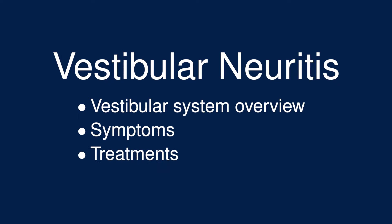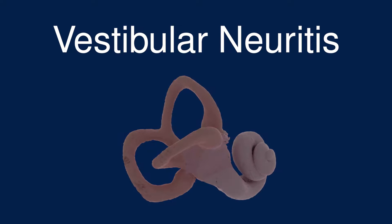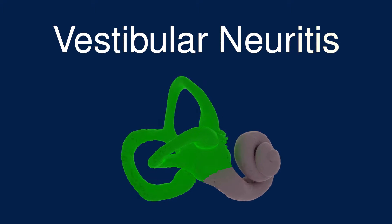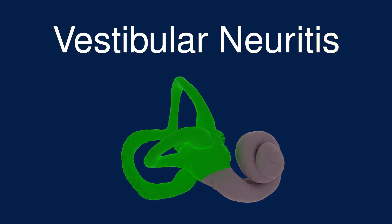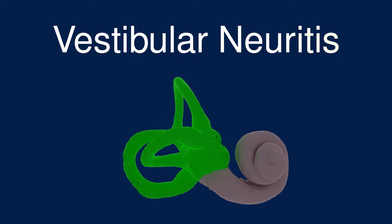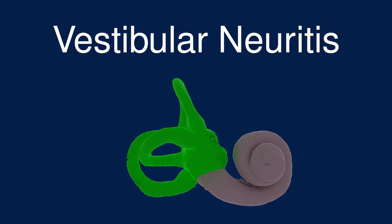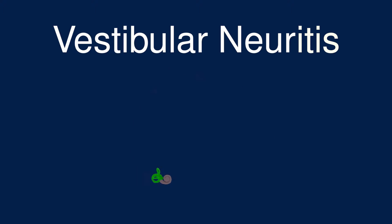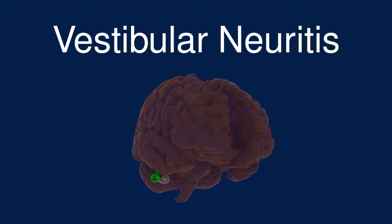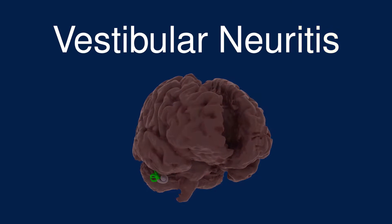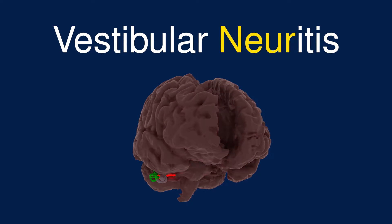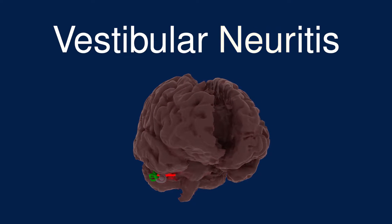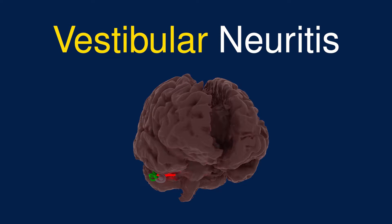The vestibular system is the part of the inner ear responsible for sensing the orientation and movements of the head. Vestibular neuritis is inflammation of the nerves that send signals from the vestibular system to the brain.